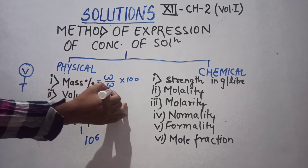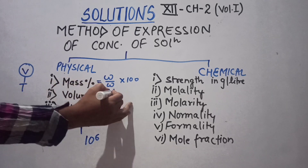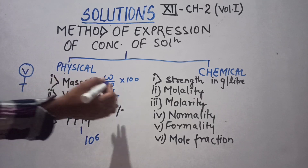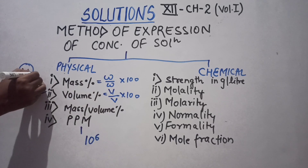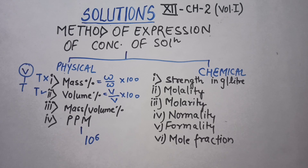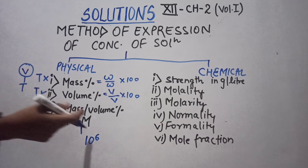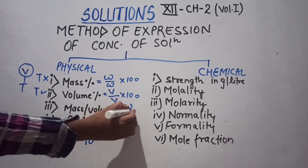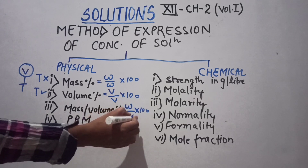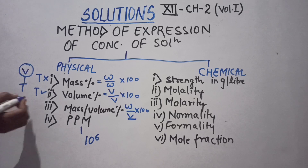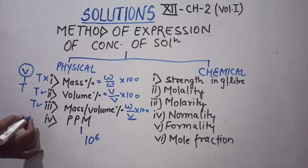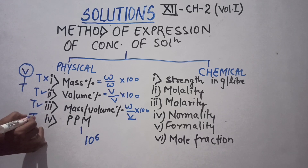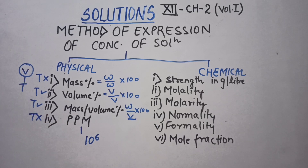Volume percentage is (volume of solute / volume of solution in mL) × 100 — this is temperature dependent. Mass by volume percentage uses weight of solute and volume of solution, so it is also temperature dependent. PPM uses mass in per million parts with no volume, so it is temperature independent.